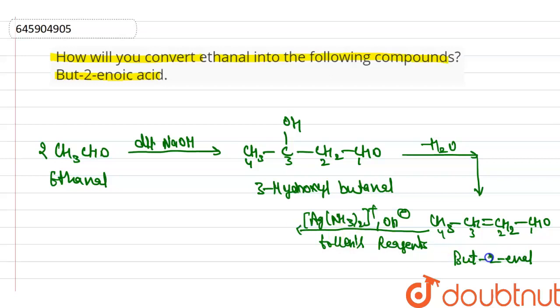But-2-enal reacts with Tollen's reagent and is oxidized to carboxylic acid. The corresponding carboxylic acid is CH3CH=CHCOOH, and the IUPAC name is but-2-enoic acid.